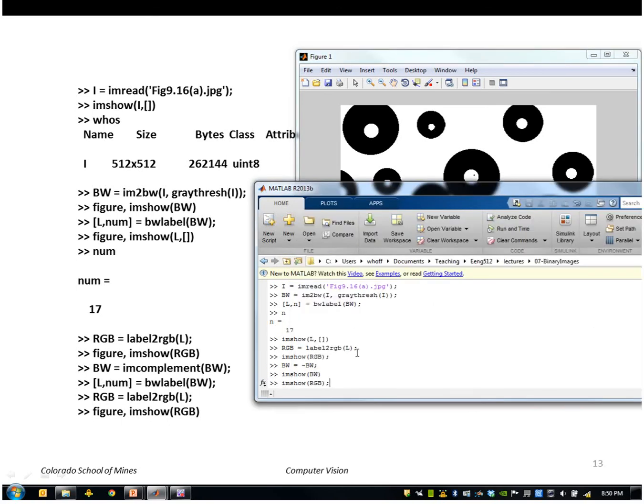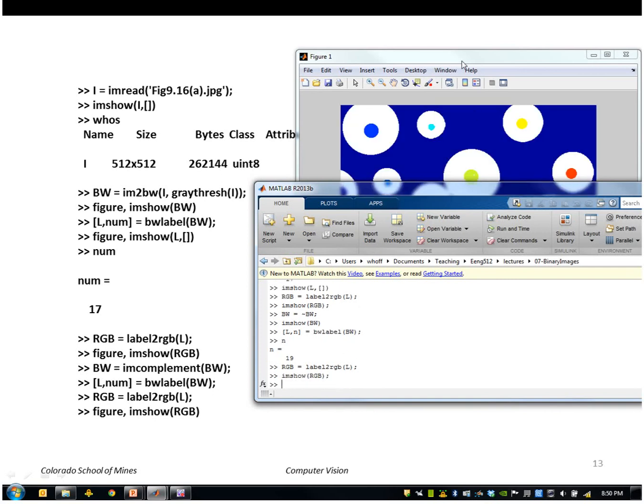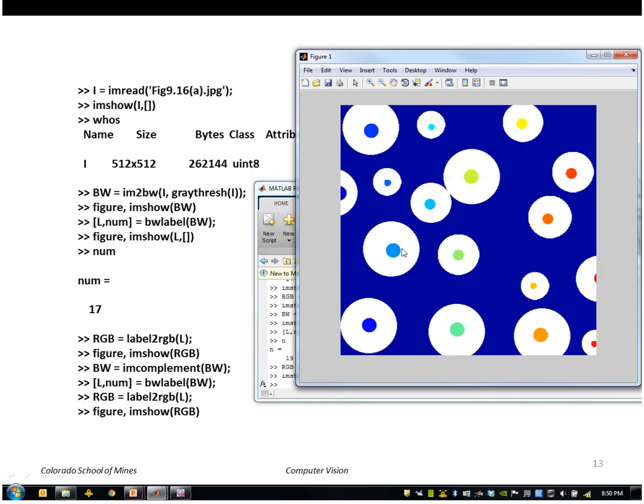So I can do the same steps. I can do BWLabel. In this case I had 19 white regions. I can assign false colors to that and then show the false color image here. So now you can see that the inner circles are assigned their own unique region numbers.